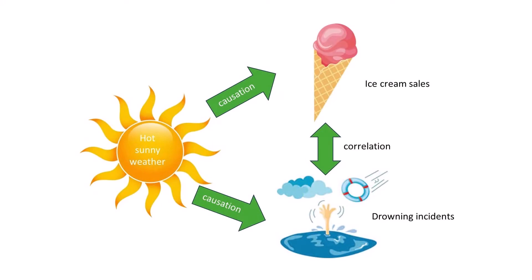The common factor here is the weather. Both ice cream sales and swimming activities increase during the hot, sunny summer weather. So the hot weather causes increased ice cream sales and more people to be swimming, hence the increased number of drownings. While there is a causal relationship between the hot weather and the ice cream sales, there is only a correlation between ice cream sales and drownings.